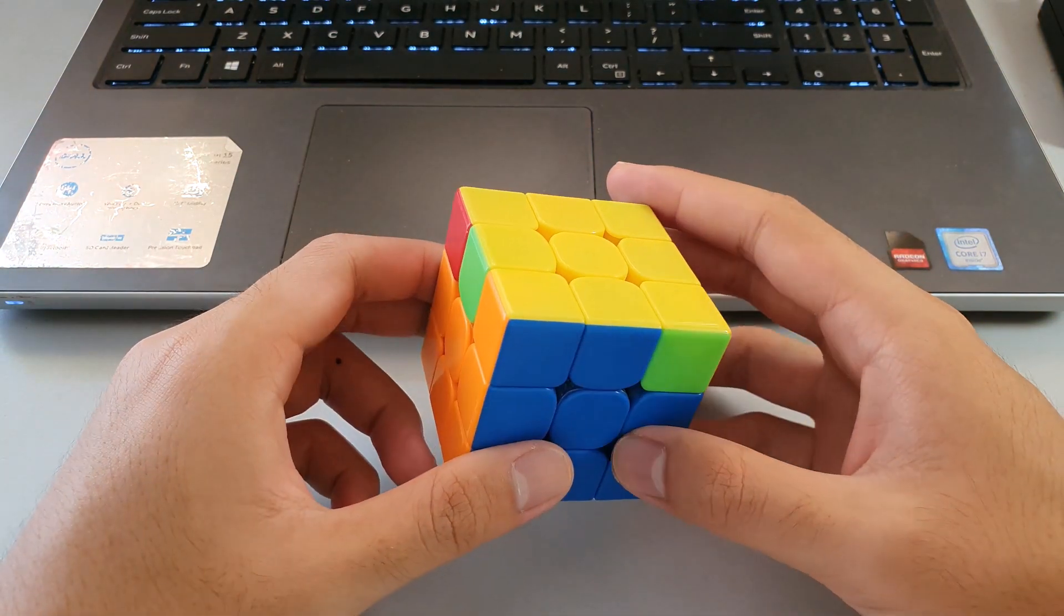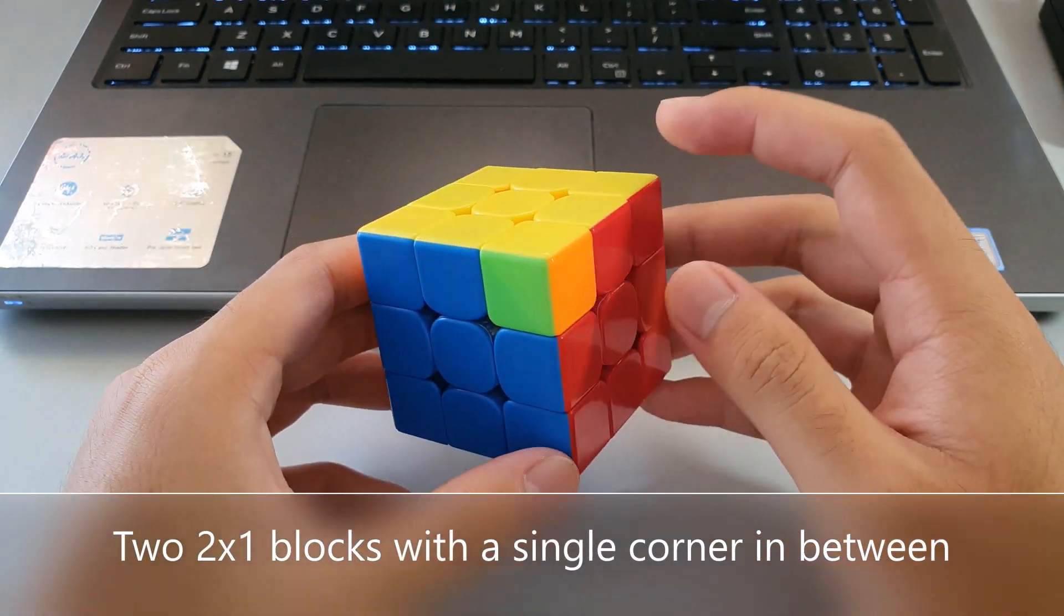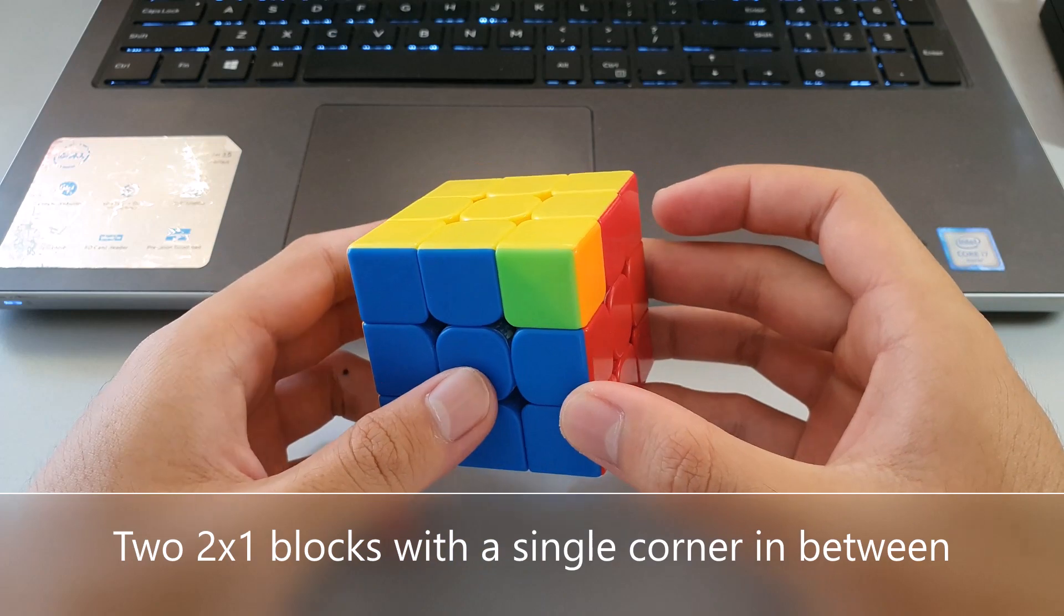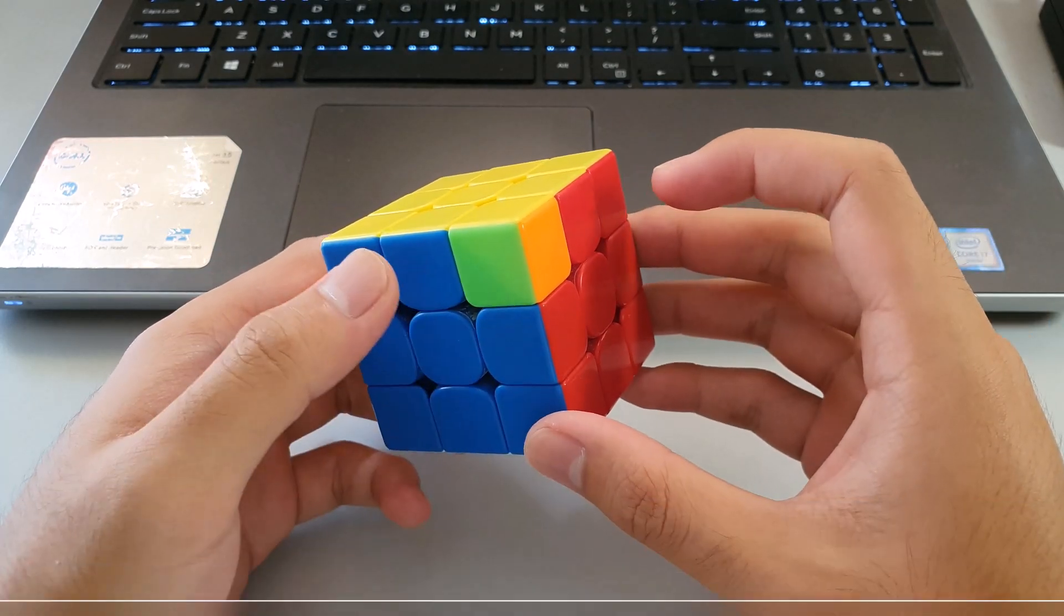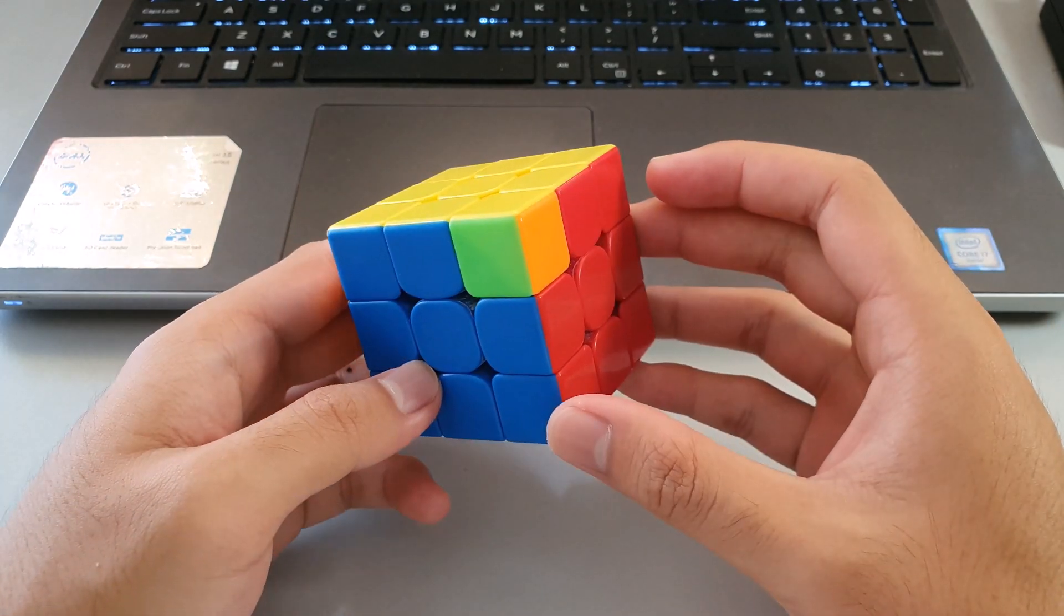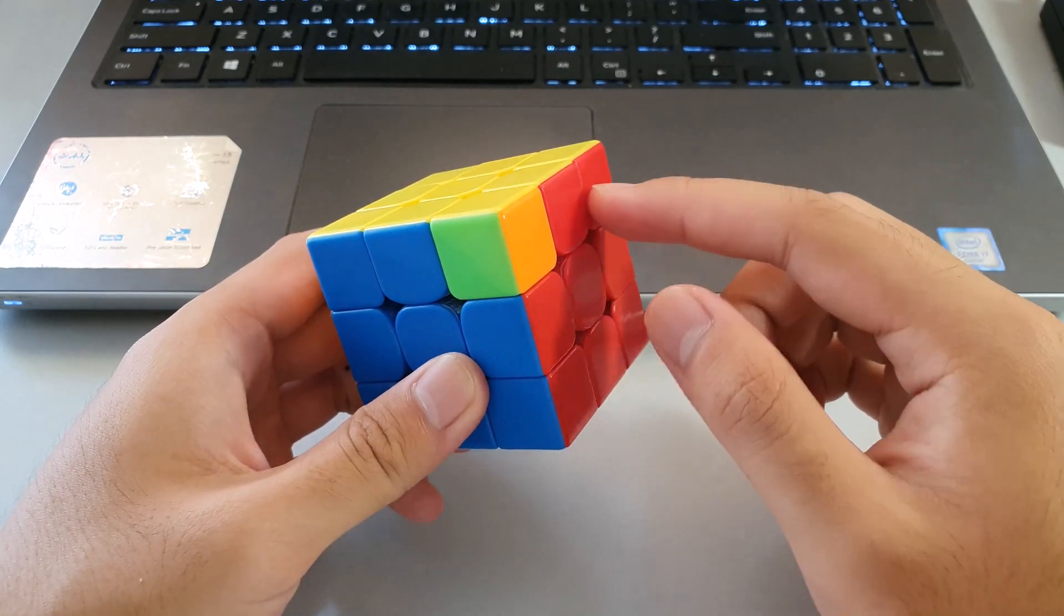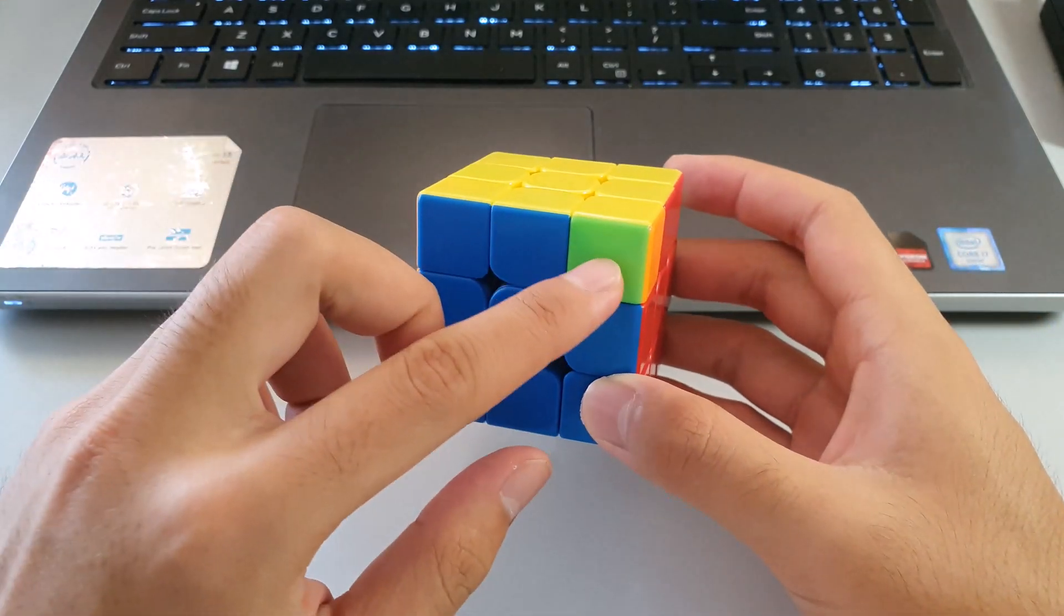Y-perms can be recognized by having both of these 2x1 blocks here and here, and a single corner that is in between these two blocks. Also notice that the colors on the corner are opposite colors to the blocks.